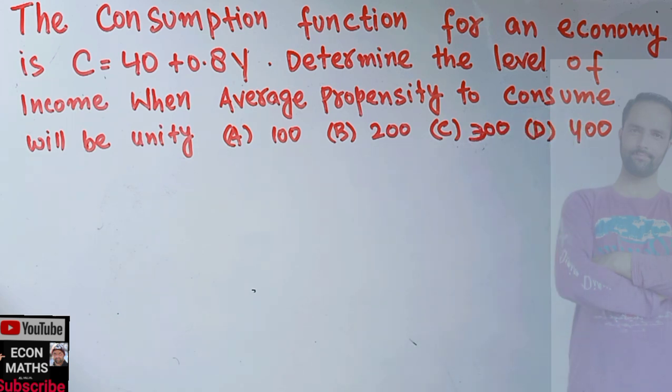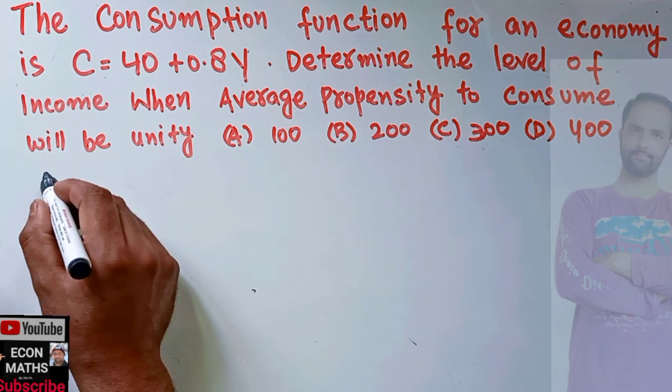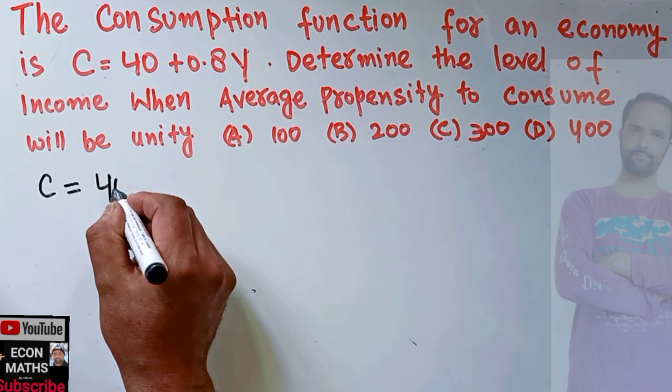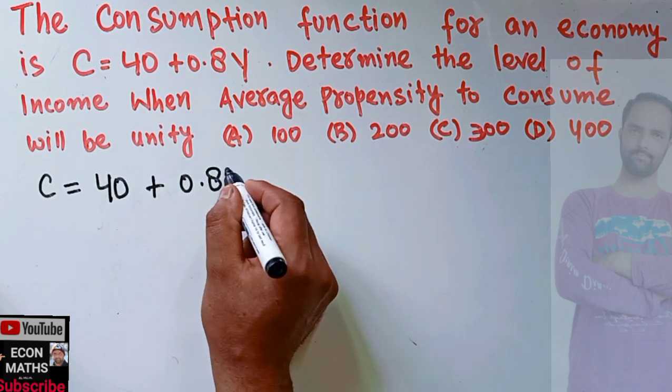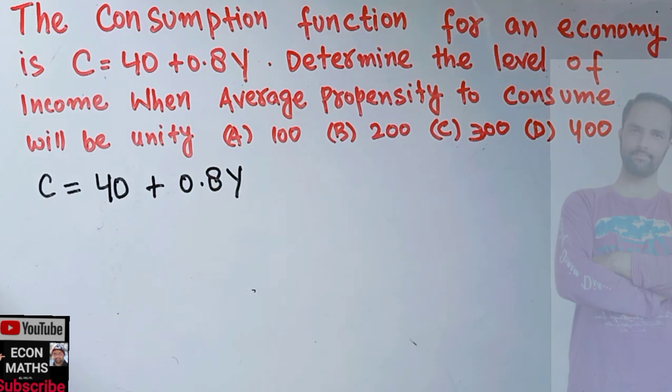So what we are basically given: we are given C = 40 + 0.8Y, this is our typical consumption function that is being given to us.